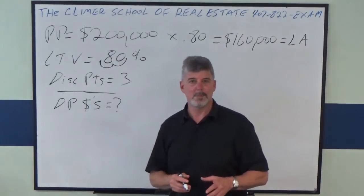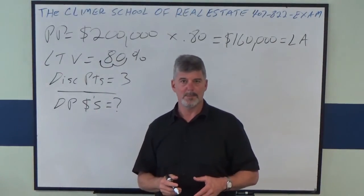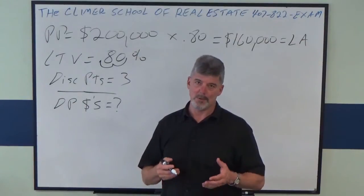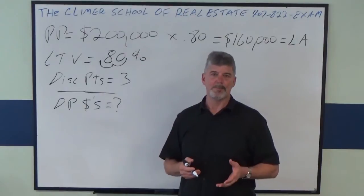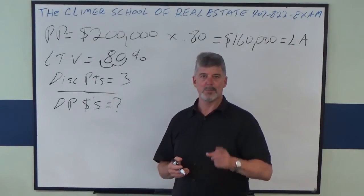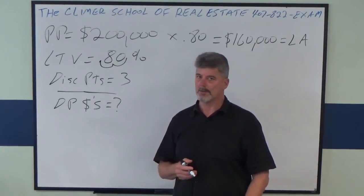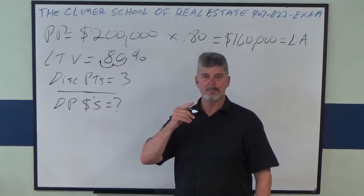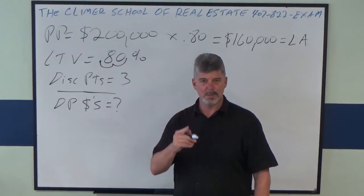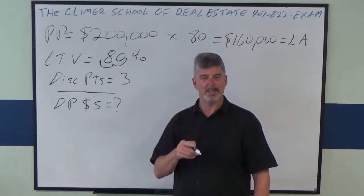Now the next thing we have to do is talk about our language in real estate. We have our own language and cliches. One of them is discount point. Discount point means 1% of loan amount, not the sales price, loan amount. One point is 1%, two points is 2%, etc.